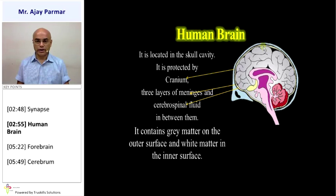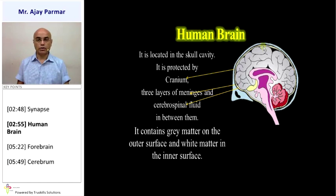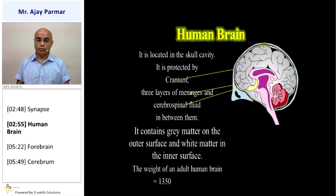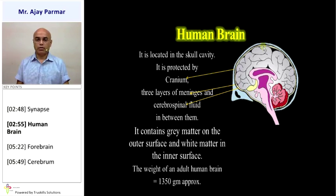The brain consists of grey matter on the outer surface, whereas the inner surface is composed of white matter. The mass of the brain of an adult human male is approximately 1350 grams — slightly more or less, but that is the average mass.